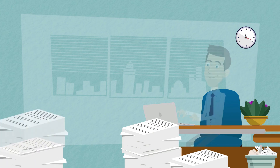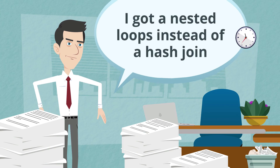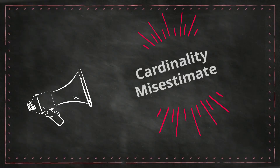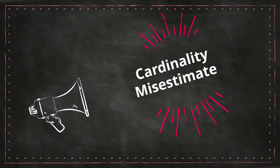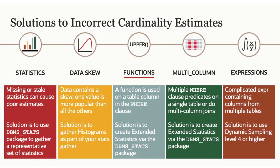What if you think the join method chosen is wrong? If nested loops is being selected instead of a hash join, that's typically because of a cardinality misestimate on the left-hand side. If the optimizer thinks the number of rows coming out of that first table is small, it will choose nested loops by default. This can happen if we've got a function-wrapped column, multiple correlated predicates on a table, or simply missing or stale statistics.